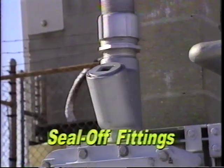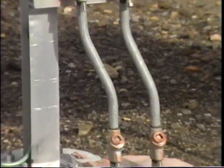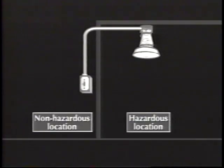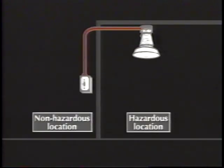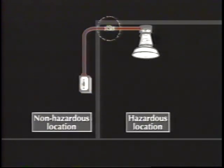Seal-off fittings are one of the most important hazardous area safety products. They work to contain explosions and minimize the passage of flames, gases, and vapors in conduit. In some cases, explosion-proof equipment is connected by conduit to non-explosion-proof equipment located in ordinary or non-hazardous areas. Flammable gases or vapors can get into the conduit and follow it back to the non-explosion-proof equipment, potentially causing a fire or explosion. Properly installed conduit seals control this hazard. Often equipment is factory-sealed. The NEC and the Appleton Code Review Booklet provide further details on where and how seal-offs must be used.